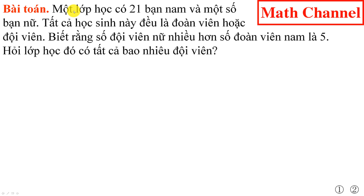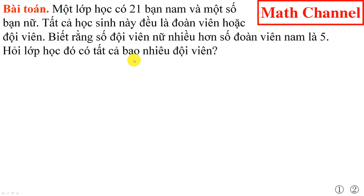Bài toán: Một lớp học có 21 bạn nam và một số bạn nữ. Tất cả học sinh này đều là đoàn viên hoặc đội viên. Biết rằng số đội viên nữ nhiều hơn số đội viên nam là 5. Hỏi lớp học đó có tất cả bao nhiêu đội viên?